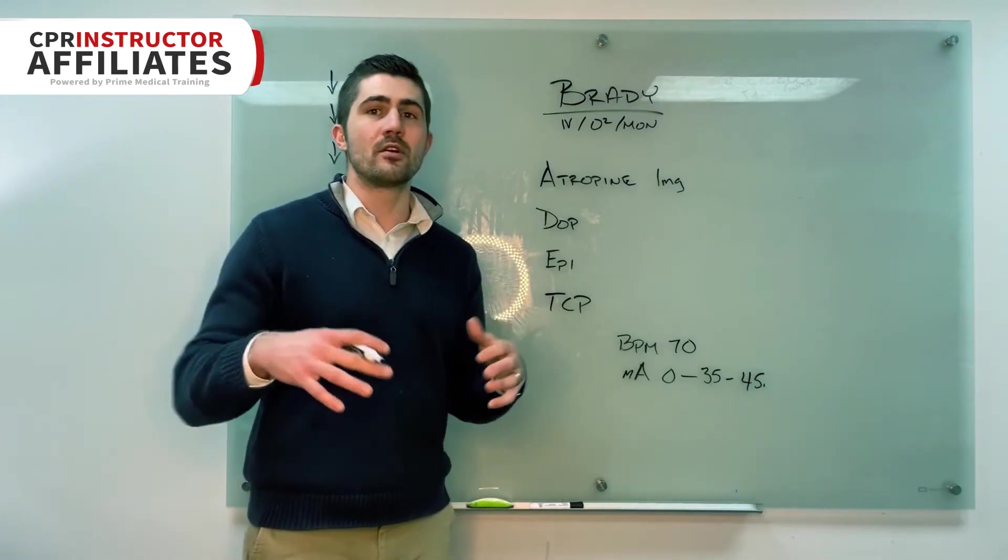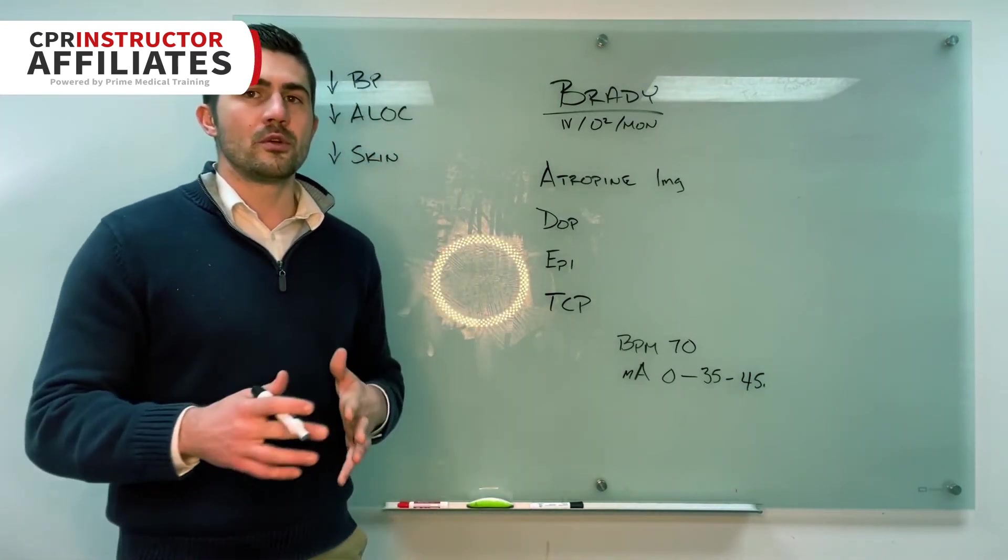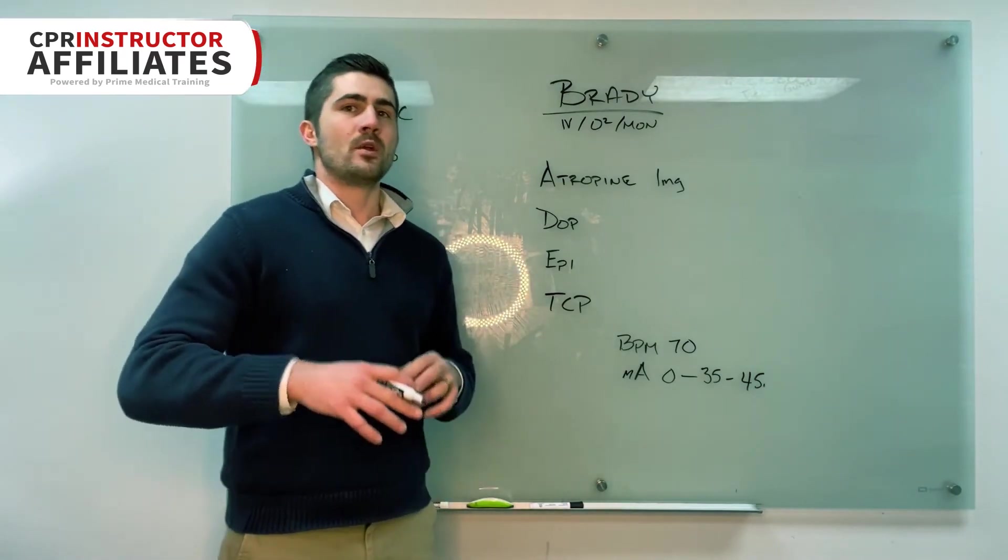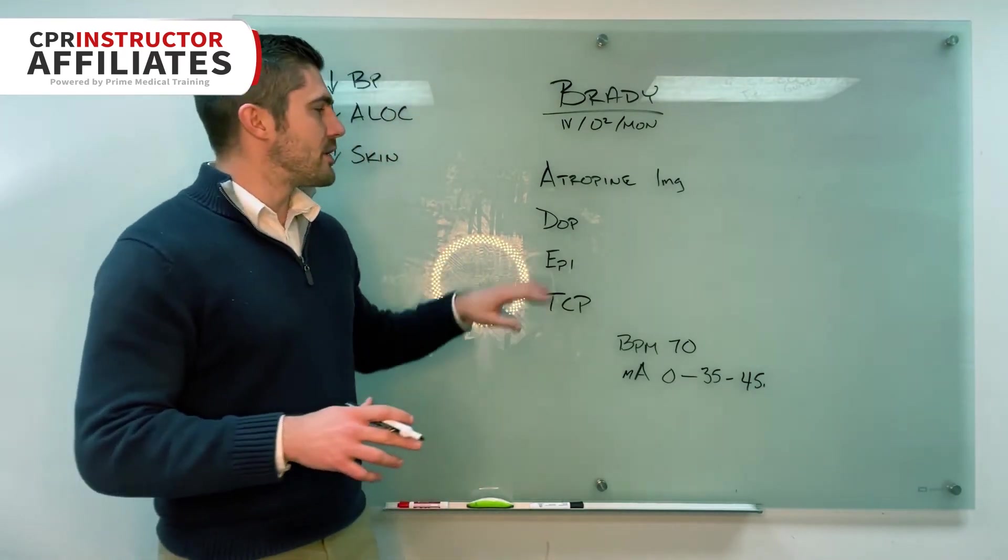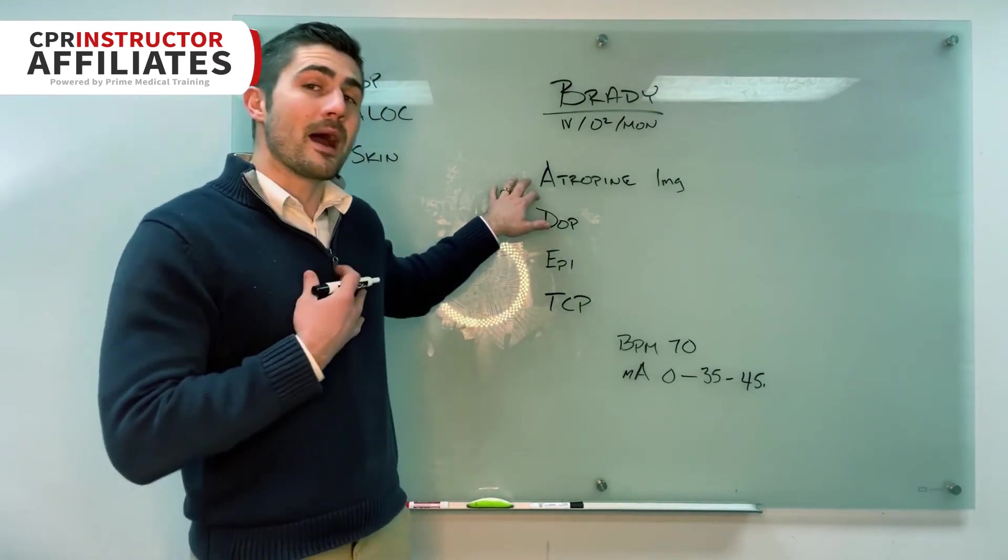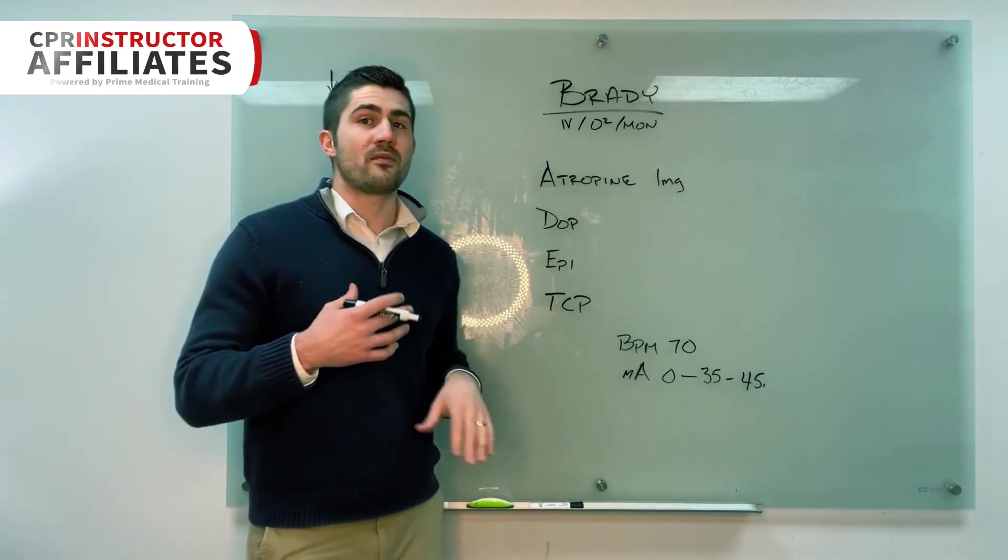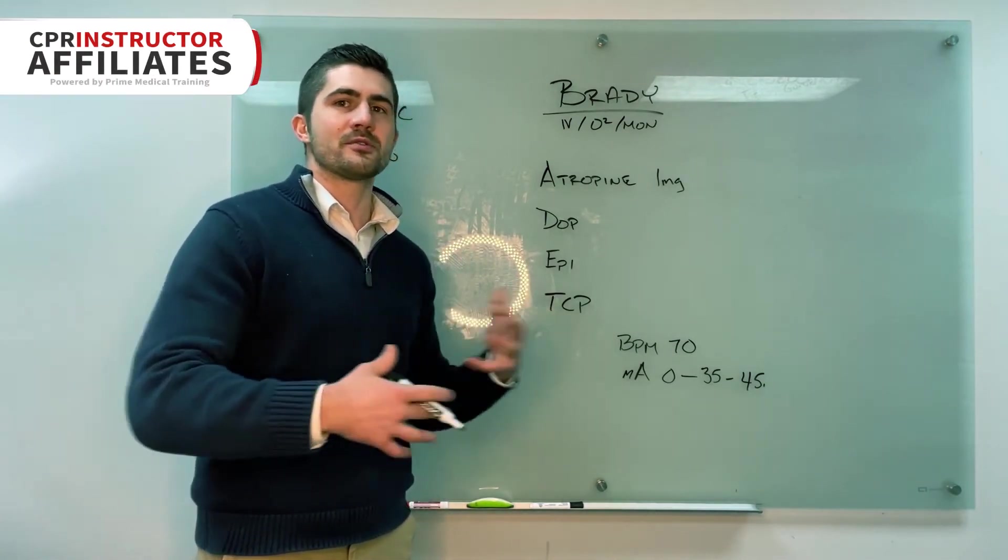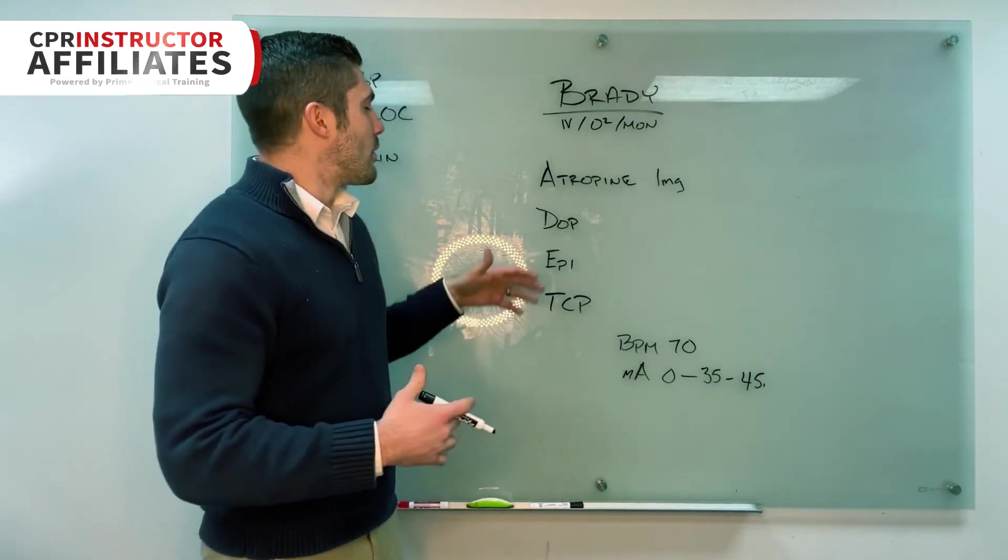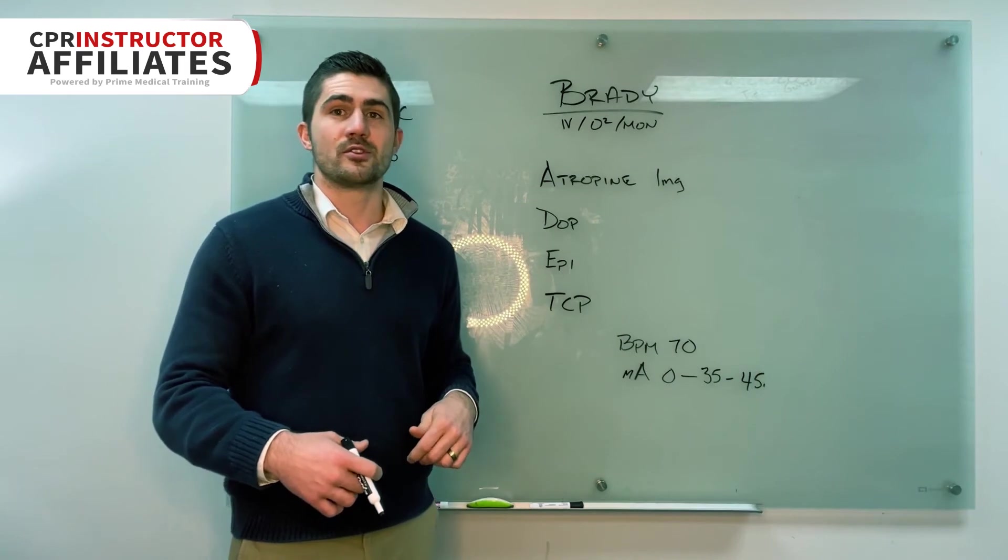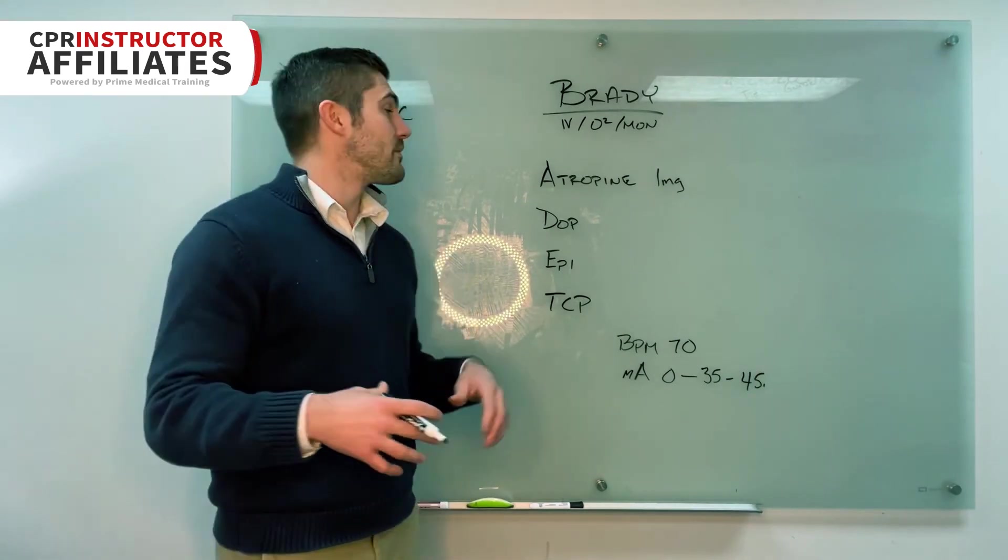Second of all, atropine is considered the go-to drug for bradycardia. However, in real life more and more people are starting to go to epinephrine. And part of the reason is atropine, even in my own experience, is only effective half of the time and the other half there's something else going on and it's just not hitting that problem. Whereas epinephrine, you give that, you're going to cause the entire body to vasoconstrict and that is definitely going to cause the heart to speed up.